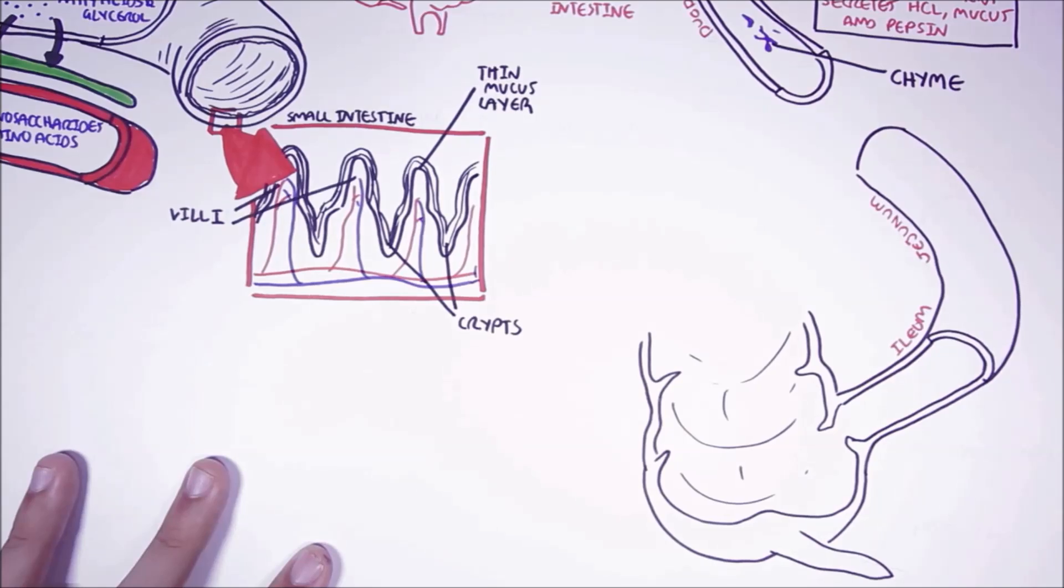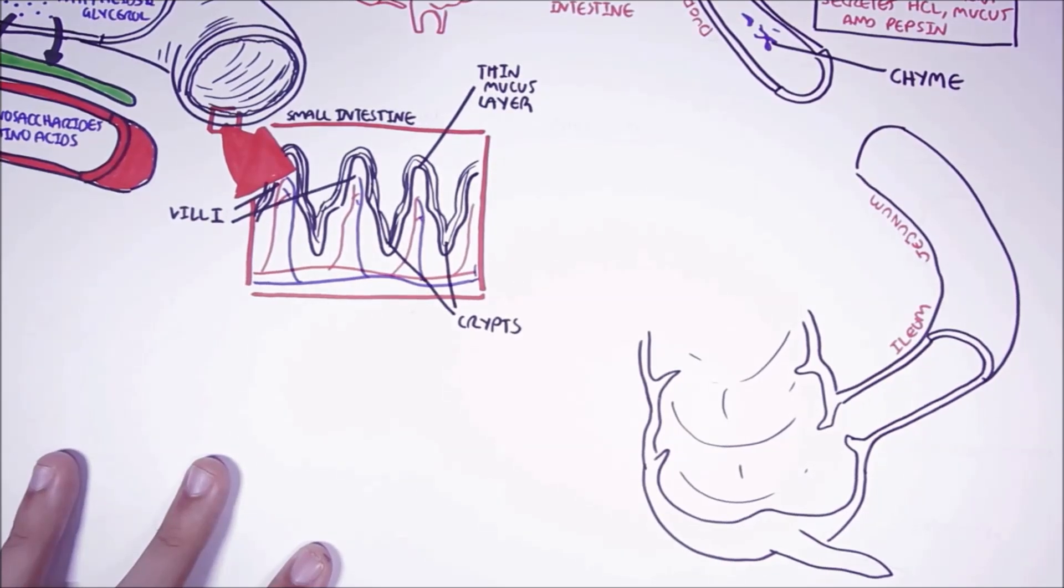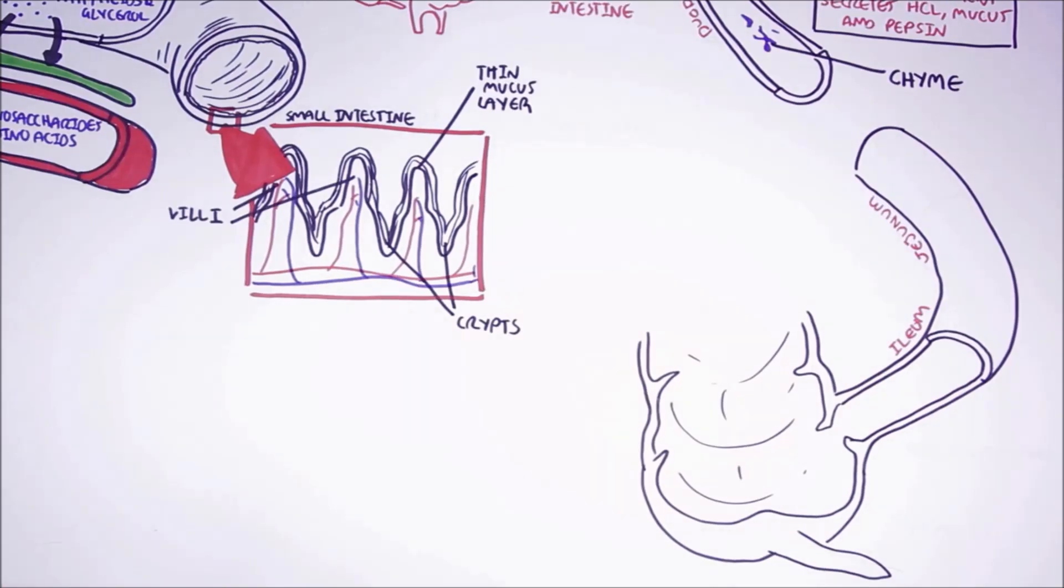Now we move on to the large intestine, also referred to as the colon. The main function of the large intestine is to absorb water and ions as well as storing and transporting waste that will be expelled by the body. But there are other things that happen within the large intestine.